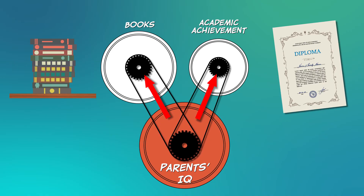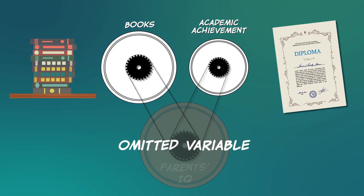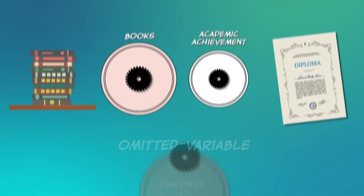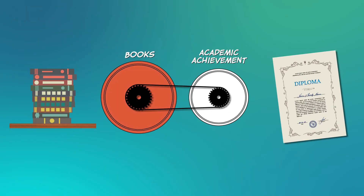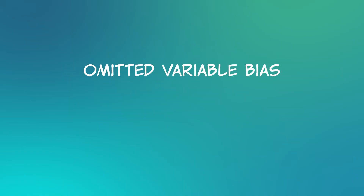By leaving out your parents' IQ, we are omitting a variable that could bias our results. Leaving out this variable makes it look like books are more important than they really are. Looking at just books and academic performance without considering your parents' IQ would be a classic case of what's called omitted variable bias.